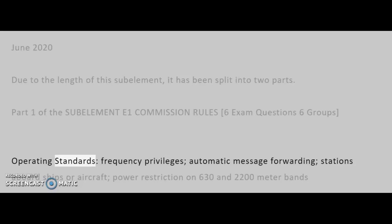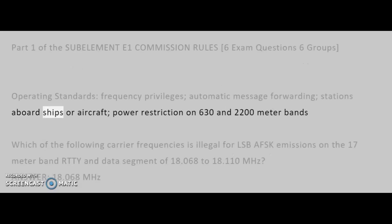The six groups covered are: Operating Standards, Frequency Privileges, Automatic Message Forwarding, Stations Aboard Ships or Aircraft, and Power Restrictions on the 630 and 2,200-meter bands.